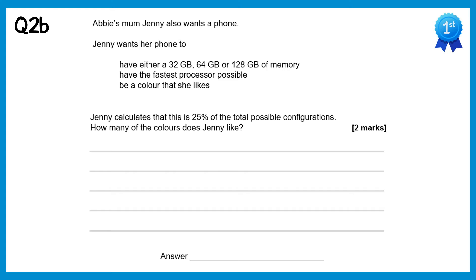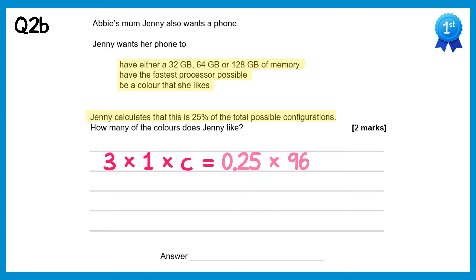For part B though, Jenny wants a particular type of phone. She's happy with three of the different memory sizes, so we'll do three. She wants the fastest processor possible — now there can only be one of those, so times one — and then she wants it to be a colour that she likes. Now we don't know how many colours she likes, so we'll just call that C. We're then told that she calculates this as 25% of the possible configurations. Now we found out in part A there were 96 configurations, so we just need to do 25% of this: 0.25 times 96, which gives you 24. So we do 3 times 1 times C, which is 3C, and this equals 24, in which case C is 24 divided by 3, so C is 8. So there are 8 colours that Jenny likes.